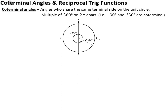Today we're talking about co-terminal angles and reciprocal trig functions — both things we've actually already talked about. So just as a reminder: co meaning together, terminal meaning ending — co-terminal angles are angles that end together in the same place on our unit circle. The technical definition is angles that share the same terminal side, so the side where they stop is the same on our unit circle.